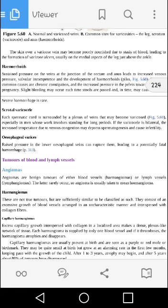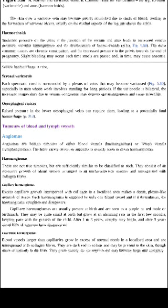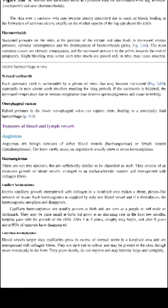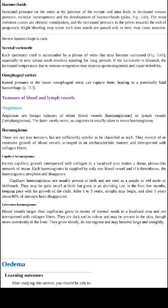If these varicose veins are present in the testicle region, this leads to scrotal varicocele. Each spermatic cord is surrounded by a plexus of veins that becomes varicosed, especially in men whose work involves standing for longer periods. Additionally, if varicose veins occur in the esophageal region, it leads to esophageal varices, which may rupture, leading to potentially fatal hemorrhage.